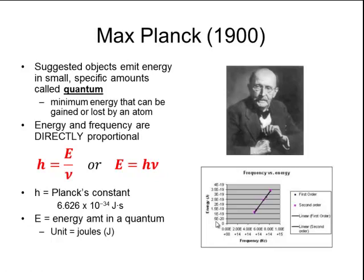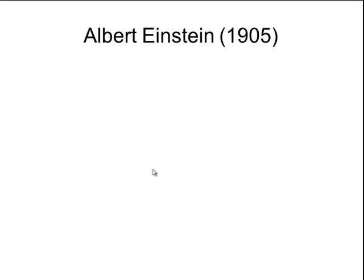I can also rearrange that equation to say E equals h nu, where h is Planck's constant, 6.626 times 10 to the negative 34th joules seconds. E is the amount of energy in the quantum, and that is always measured in joules. And then nu is that symbol for frequency, which is measured in waves per second.